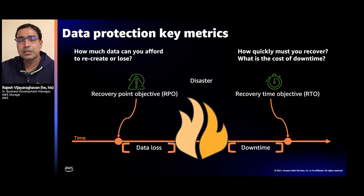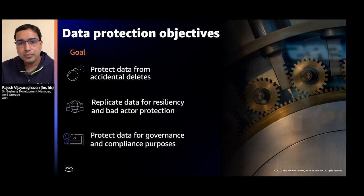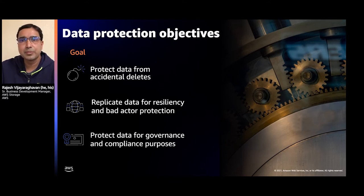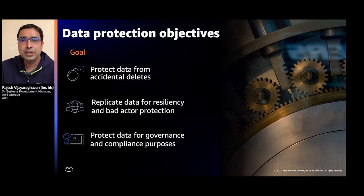The key data protection objectives for companies include: protecting from human error such as accidental deletes — like a storage administrator deleting a table or S3 bucket; ensuring there is another copy of data in case of malicious attacks or ransomware, providing an additional layer of protection for resiliency; and having a compliance and governance model so that when something happens, there is a way to audit and meet legal requirements. Throughout this presentation we will discuss AWS features that address all these goals.